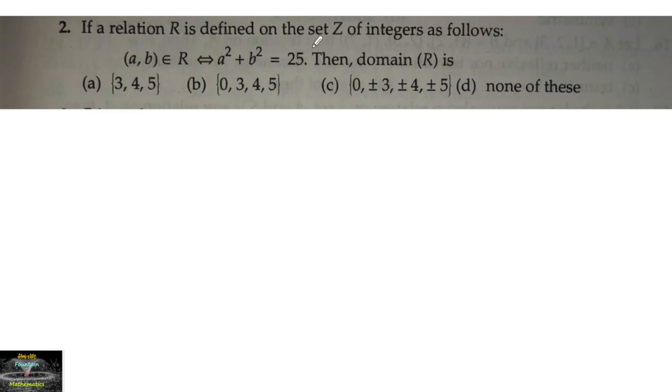If a relation R is defined on the set Z of integers as follows: (a,b) belongs to R if and only if a² + b² = 25, then what is the domain of R?